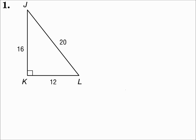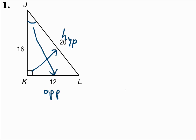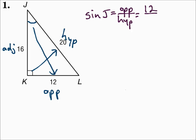Find sine J, cosine J, and tangent J, sine L, cosine L, and tangent L. Give your answers as fractions and as decimals. Here we're looking for the trigonometric ratio, so our answer will be a fraction and a decimal. Start with angle J. When I use angle J, let's identify opposite, adjacent, and hypotenuse. The side opposite angle J is opposite, the side opposite the right angle is the hypotenuse, and the leg adjacent to angle J is adjacent. Sine of J equals opposite over hypotenuse: opposite is 12 and the hypotenuse is 20, which reduces to 3/5, and as a decimal that's 0.6.